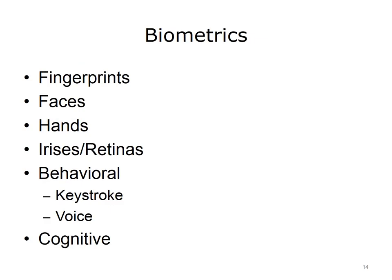Biometrics are unique to an individual. Typical biometrics are fingerprints, faces, hands, irises, or retinas. These are scanned by a system and compared to the image on file. If they match, the user is authenticated and granted the appropriate access. Another type is behavioral biometrics — for example, looking at how a person types. The system measures the time a user dwells on a key and the time it takes to move between keys. Voice is another behavioral biometric. A new form is cognitive biometrics, which looks at how a user responds to a situation or his thought process.